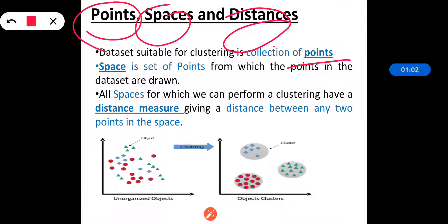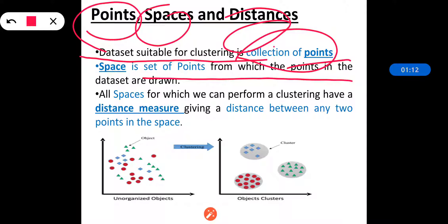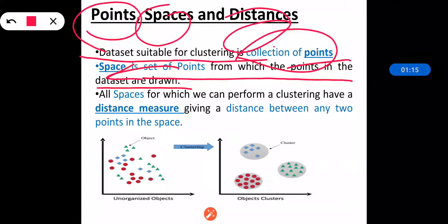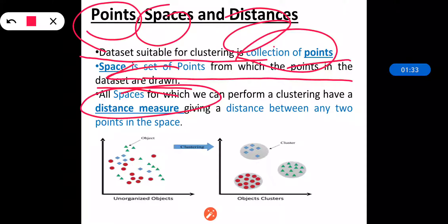What is a point? A data set suitable for clustering is nothing but a collection of points. The set of points from which the points in the data set are drawn is called a space. All spaces for which we can perform clustering should have a distance measure giving a distance between any two points in the space. In general, a space is a universal set of points from which the points in the data set are drawn. However, we should be mindful of the common case of Euclidean space.